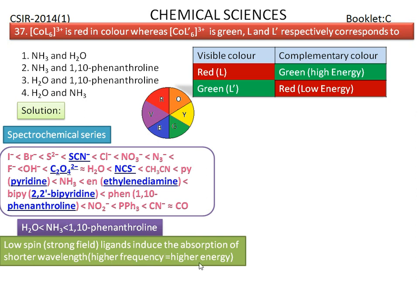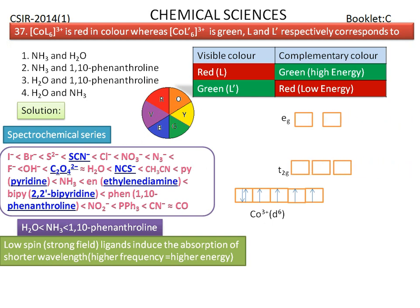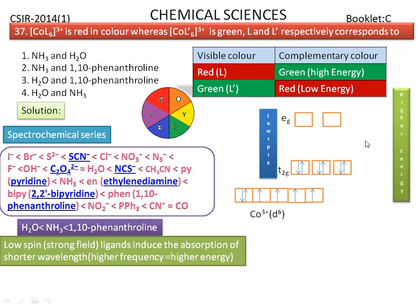Strong field (low spin) ligands induce absorption of shorter wavelengths, i.e., higher energy. Cobalt exists in a d6 configuration. In the presence of strong field ligands, the crystal field stabilization energy (CFSE) is high, so electrons occupy the t2g orbitals. Due to this high energy gap, the complex absorbs green wavelength, promoting electrons from t2g to eg orbitals.